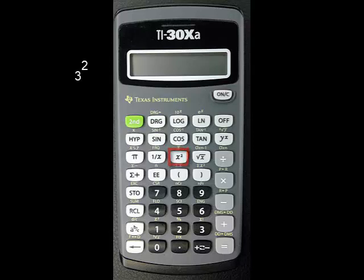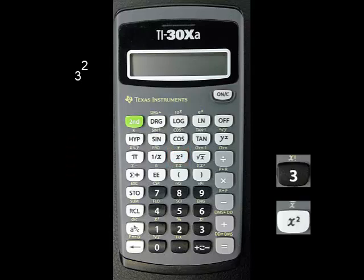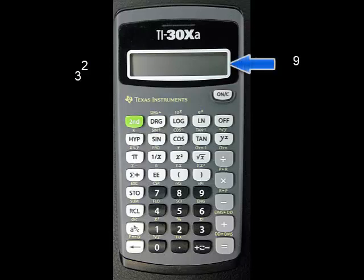To calculate 3 squared, for instance, enter 3, then press the x squared button. It is a unary operator, and the answer 9 appears immediately on the screen without having to press the equal sign.